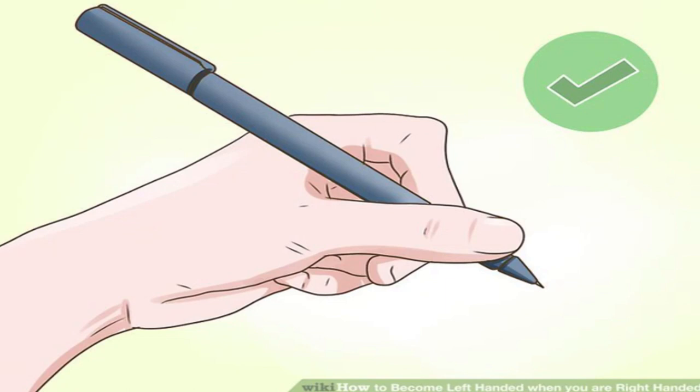The materials you write with can also make a significant difference to how comfortable you find writing with your left hand. Use nice quality, lined writing paper and a good pen with free-flowing ink. Also tilt the paper or writing pad you are working with 30 to 45 degrees to the right. Writing at this angle should feel more natural.